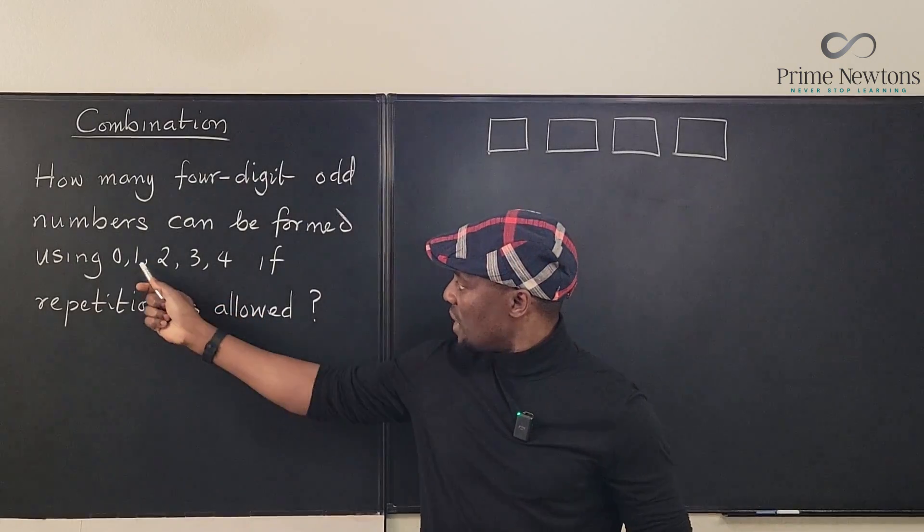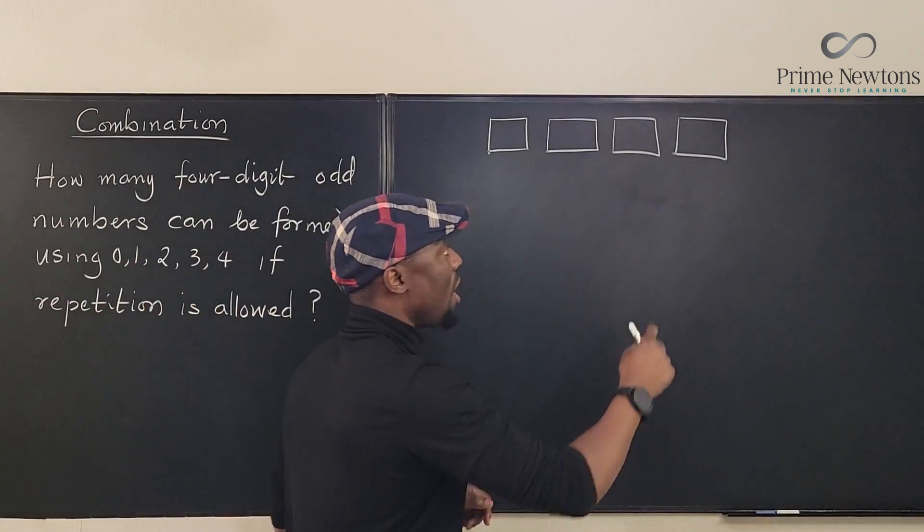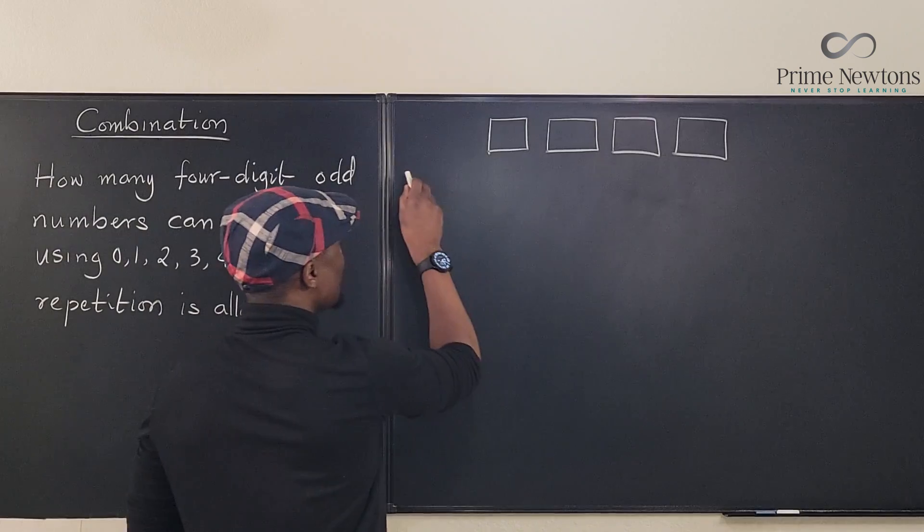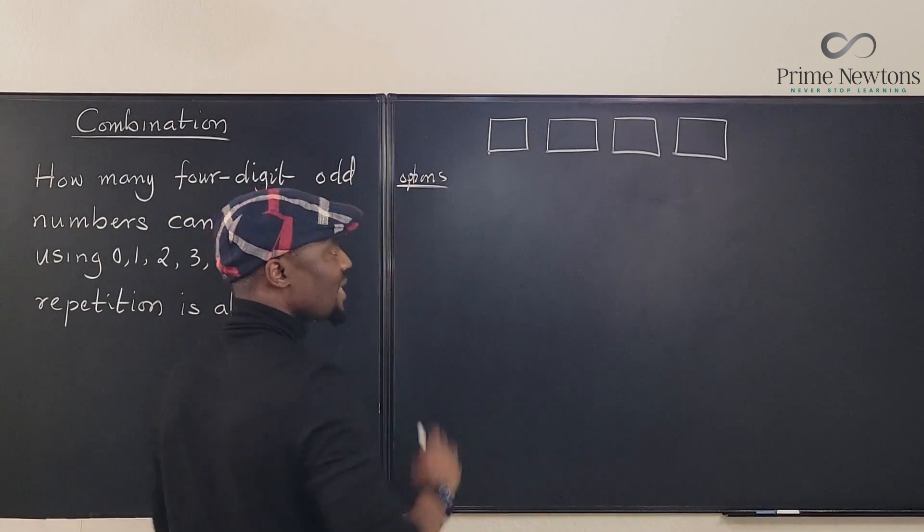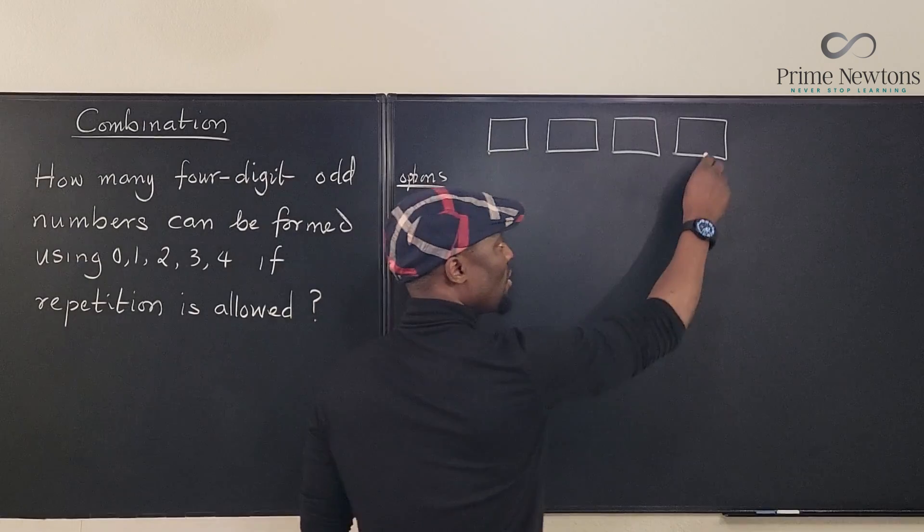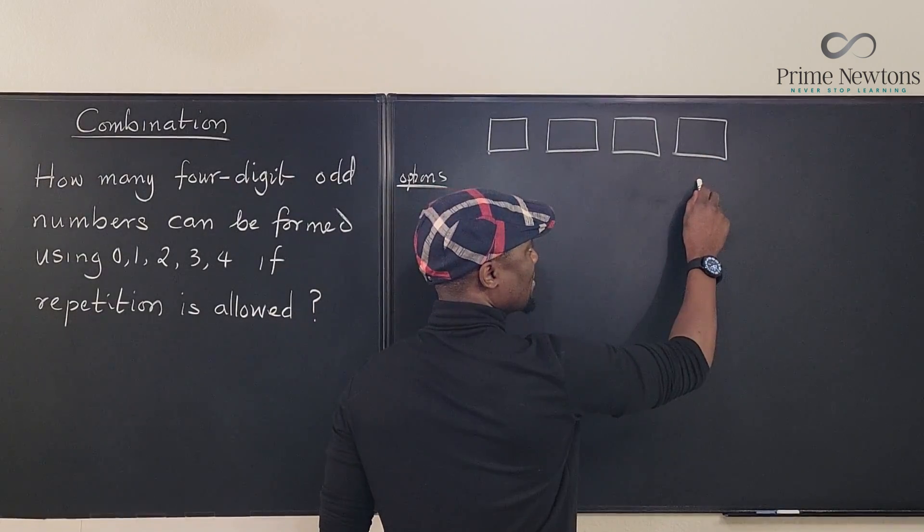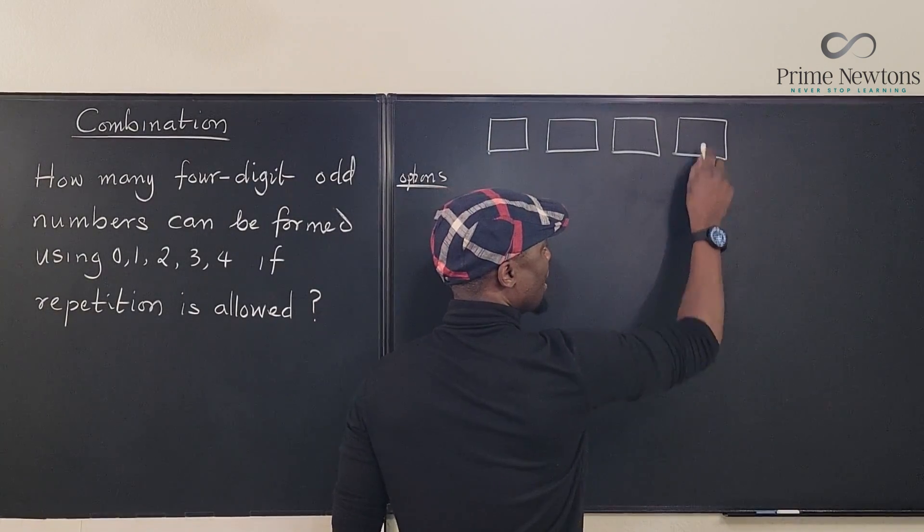So in order to write the number, this is where you focus first. The last digit has to be an odd number, and how many odd numbers do we have? One and three. So here you have options. The number of options here will be two. We actually have two options.